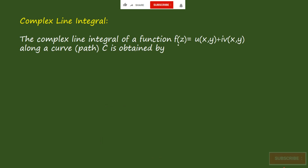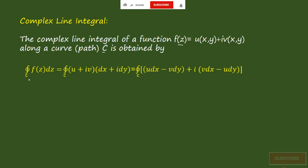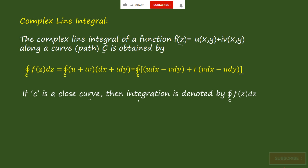The complex line integral of a function f(z), which is u plus iv where u and v are functions of x and y, along a closed curve or path C is obtained as follows. The integral over a closed curve C of f(z) dz equals the integral of (u + iv)(dx + i dy), which expands to the integral over C of (u dx − v dy) plus i times (v dx + u dy). If C is a closed curve, the integral is denoted with a circle on the integral sign with C below, of f(z) dz.